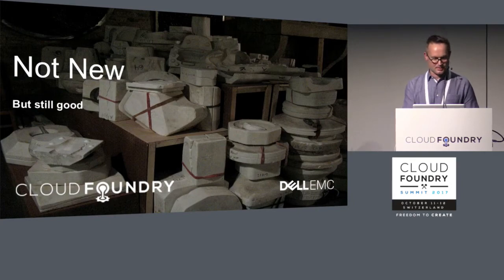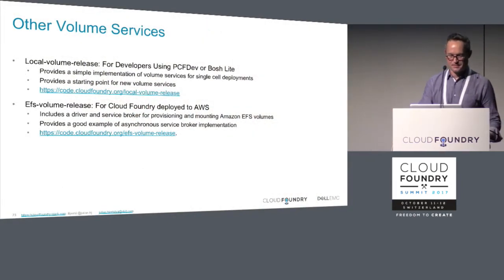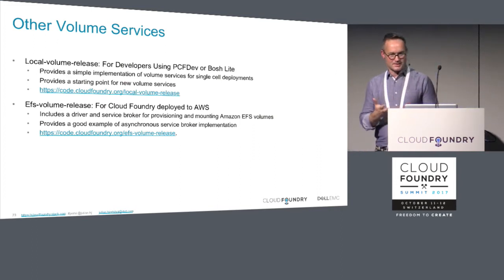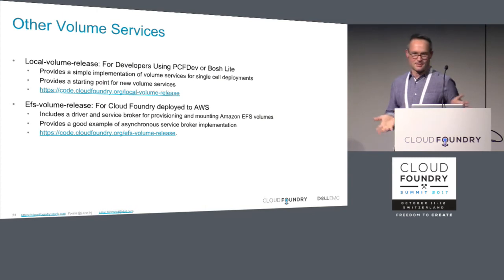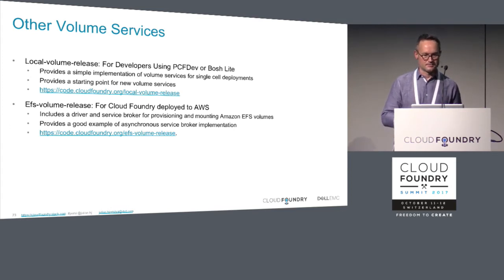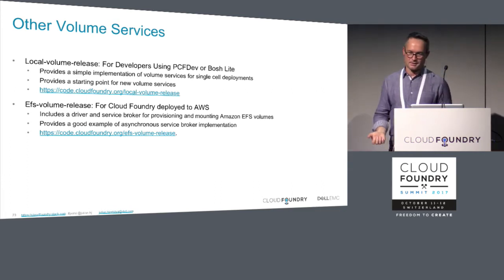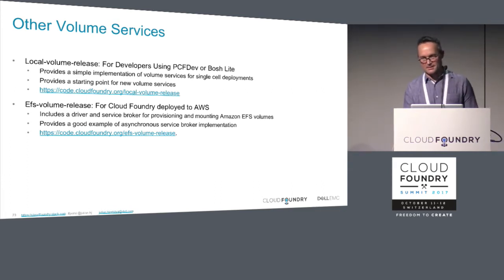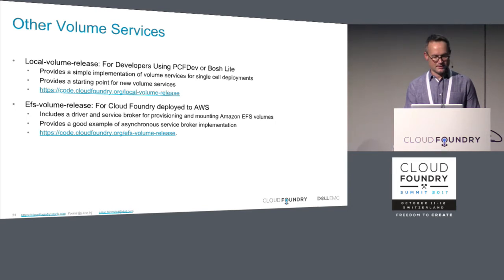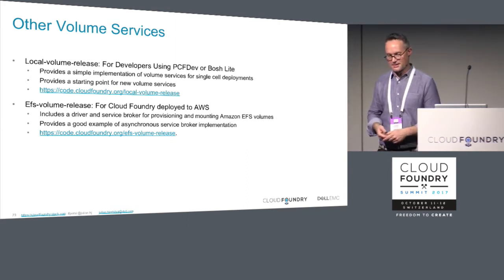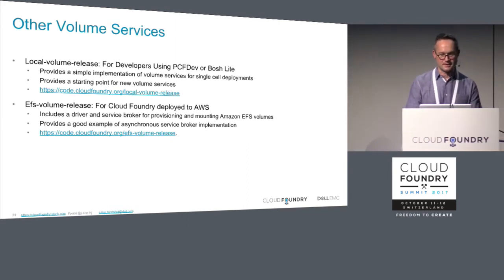Local volume release is a nice way to get started, particularly if you're running in BOSH lite or a single cell deployment — it just provisions storage off the Diego cell file system. It's not recommended for production, but if you're experimenting it's quick because you don't require a file server. It's also a good reference point if you're thinking about making your own volume plug-ins in Golang. And EFS volume release is a service broker and driver for attaching Elastic File Systems in an AWS deployment.